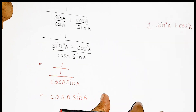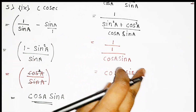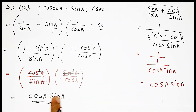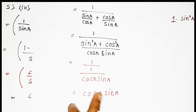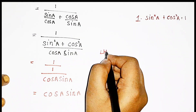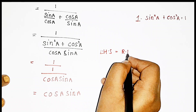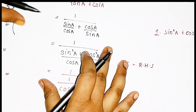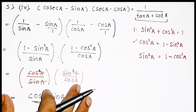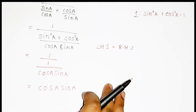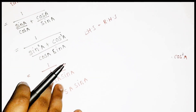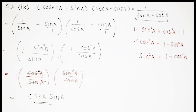Now finally we got the same answer. In the first portion we got cos A into sin A, and here also we got cos A into sin A — that means LHS is equal to RHS. This is the LHS part and these are the RHS part. I just did them separately for your understanding. Alright, so finally we solved it. Thank you guys for watching this video. Please like this video, share it with your friends, and subscribe to our YouTube channel. If you have any doubt, comment in the comment section. Catch you in the next video. Bye bye.